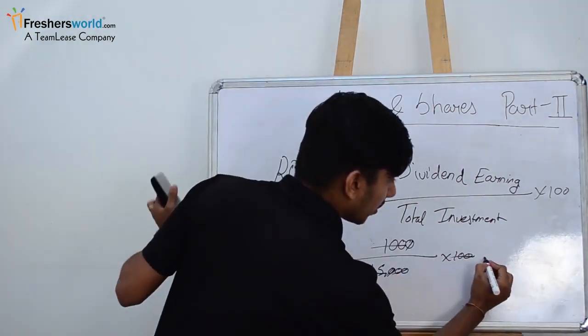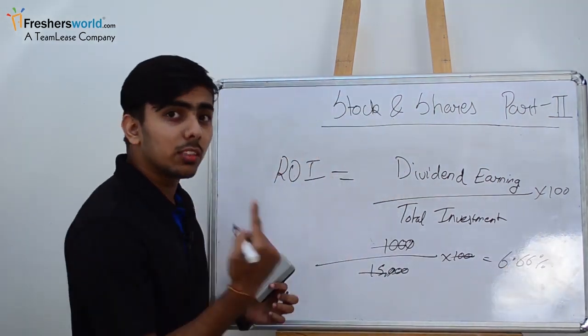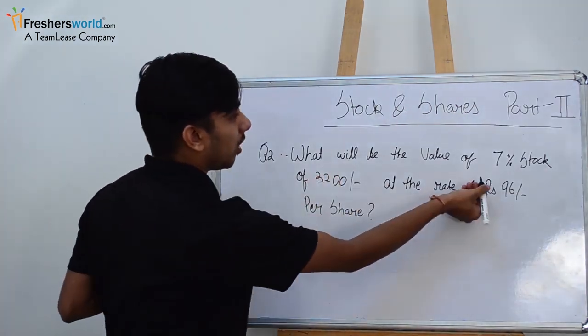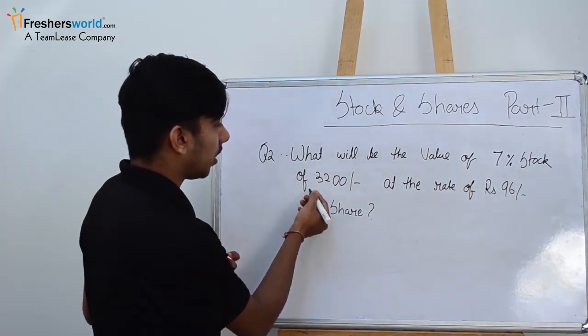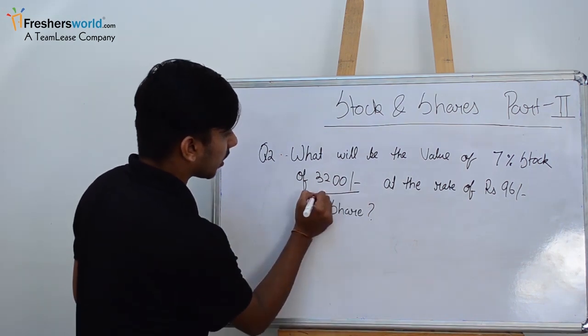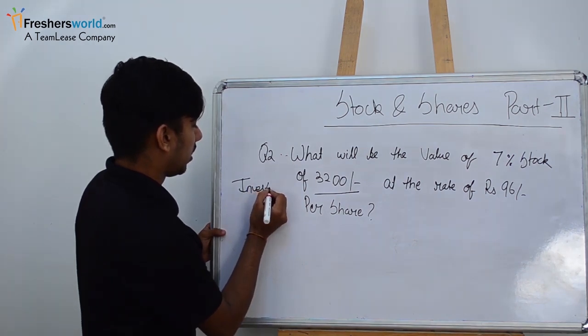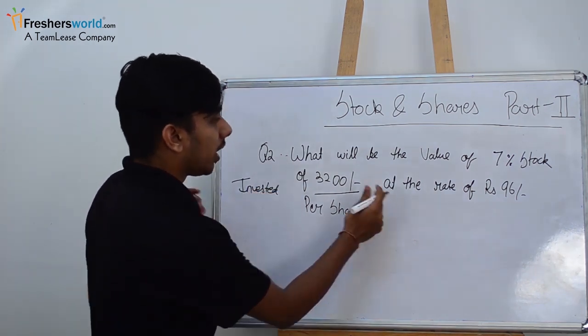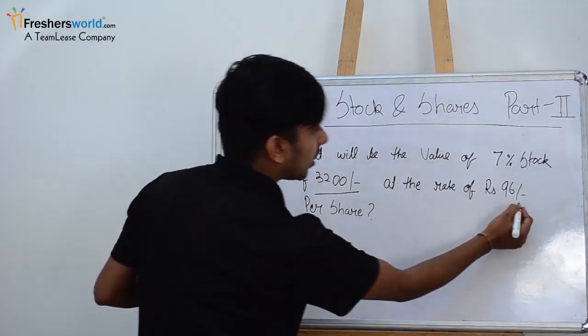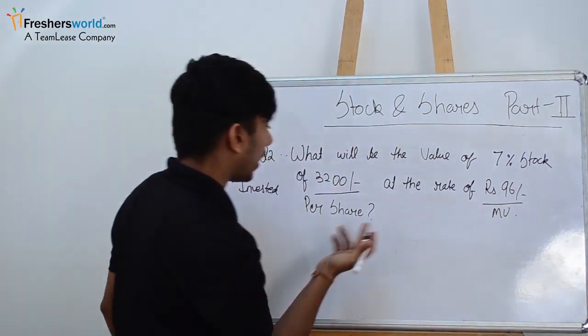Let's move to the next question. The second question is: what will be the value of 7 percent stock of 3,200 rupees? Here 3,200 rupees means you have invested this money, and the rate is 96 percent—96 is the market value of that share. So you have to find the value of these shares.